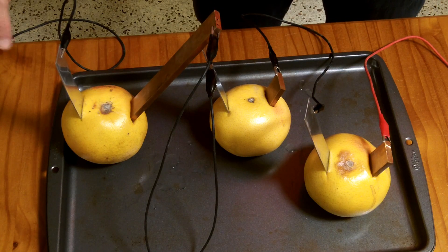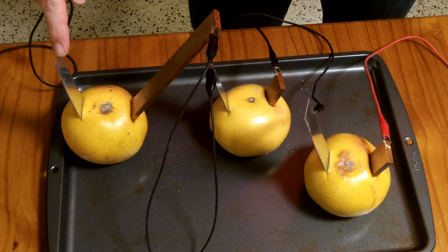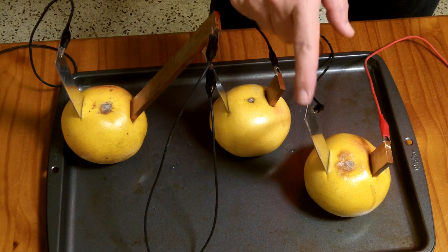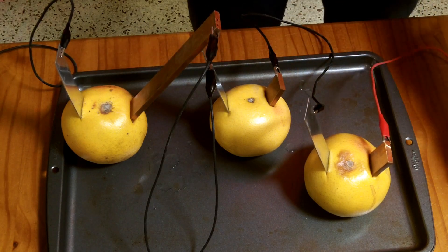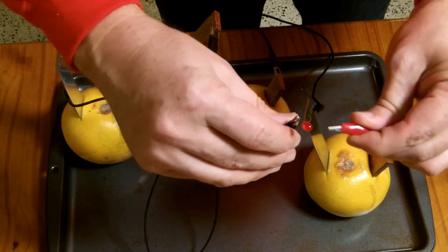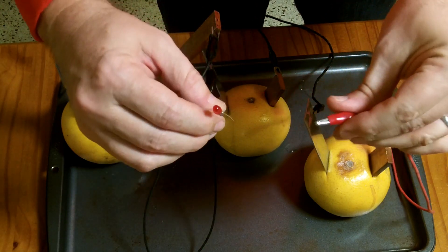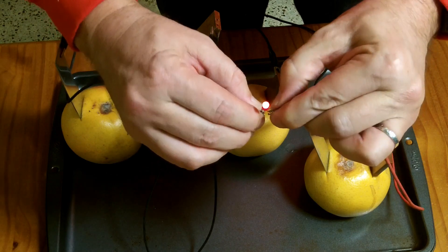Three grapefruit. Negative sides over here on the zinc. We have this copper attached to that zinc in series. This copper attached to that zinc in series. So we get about three volts total between the three grapefruits. And that lights up this tiny little LED light.